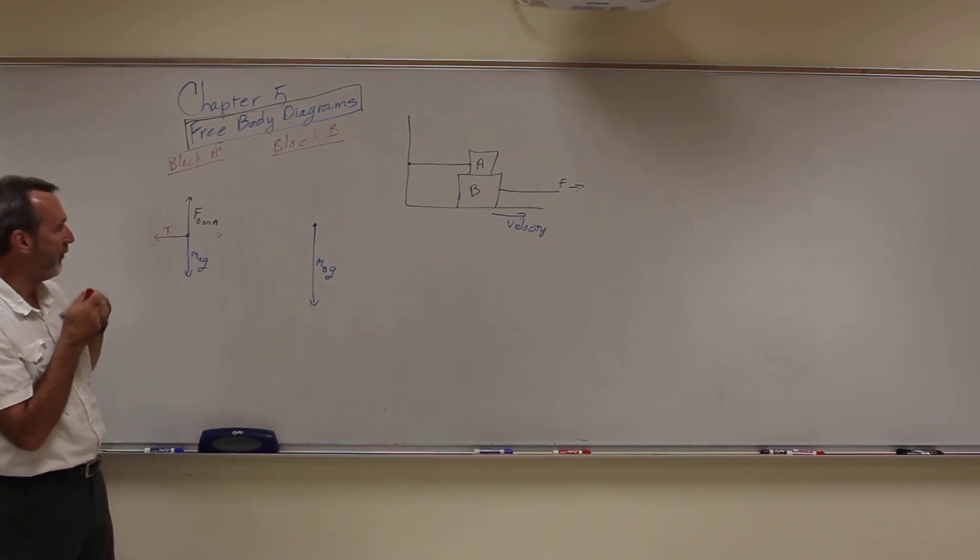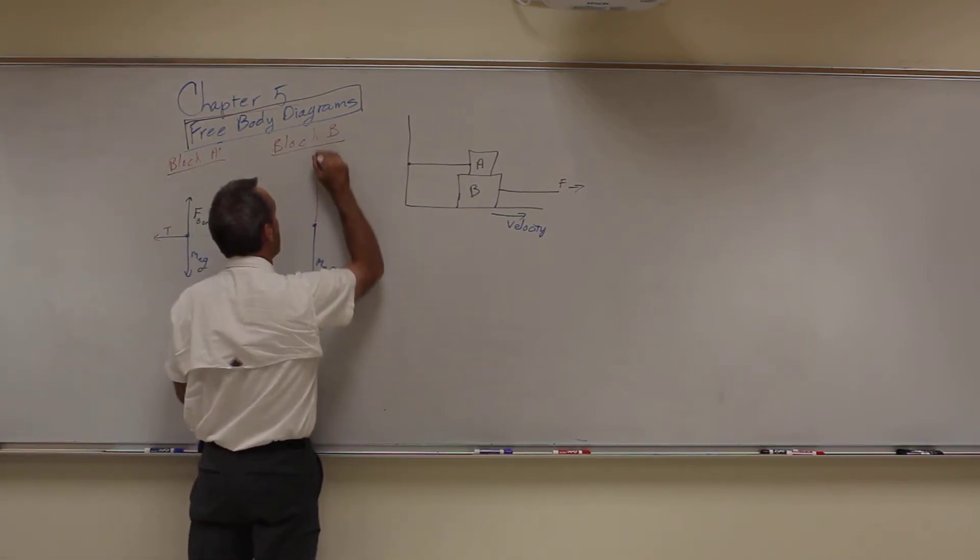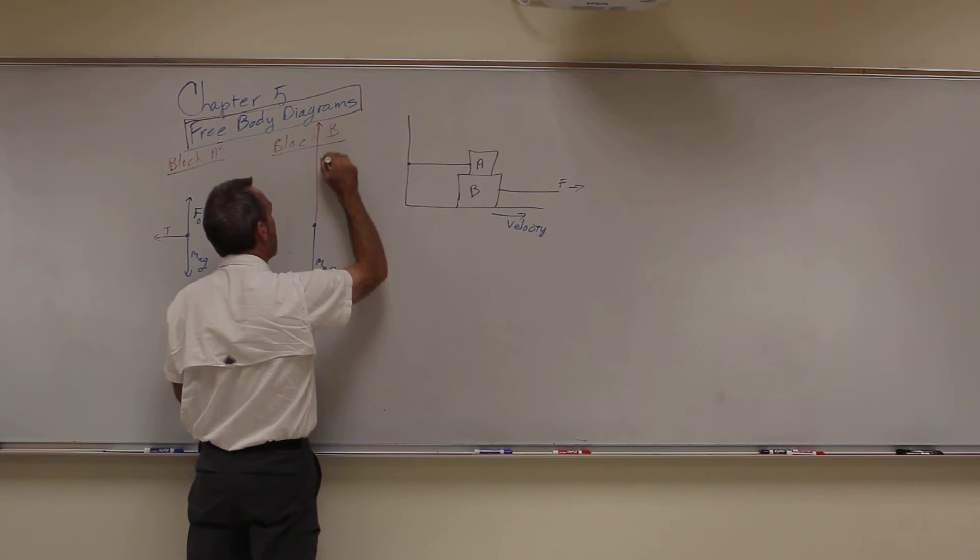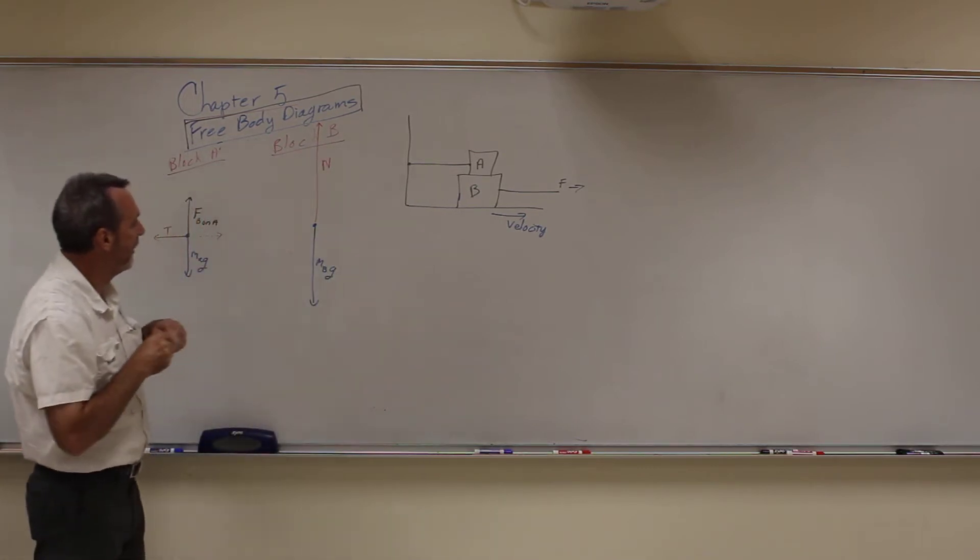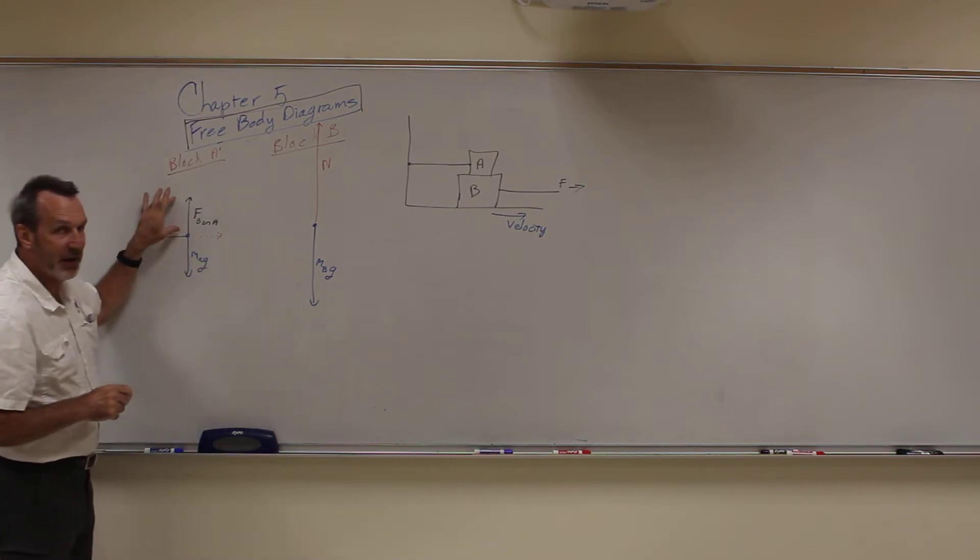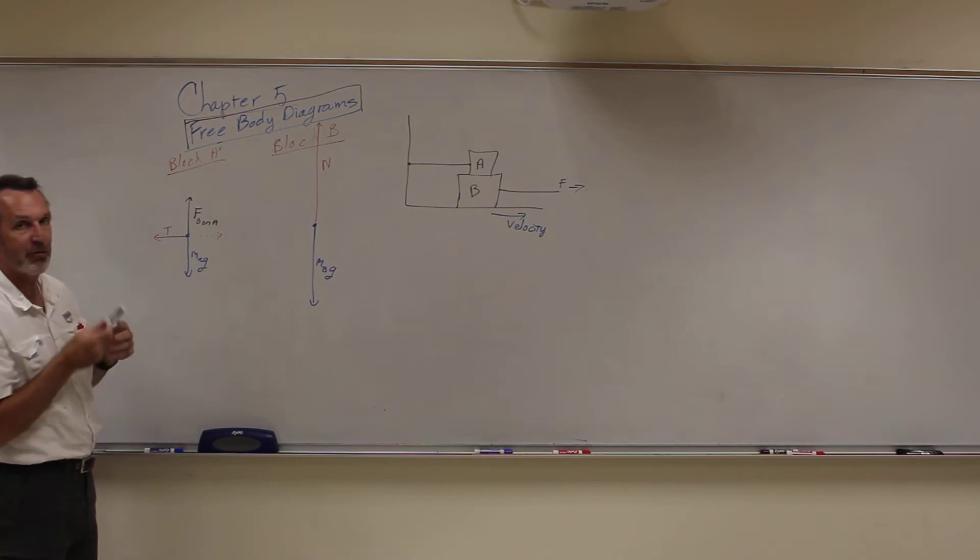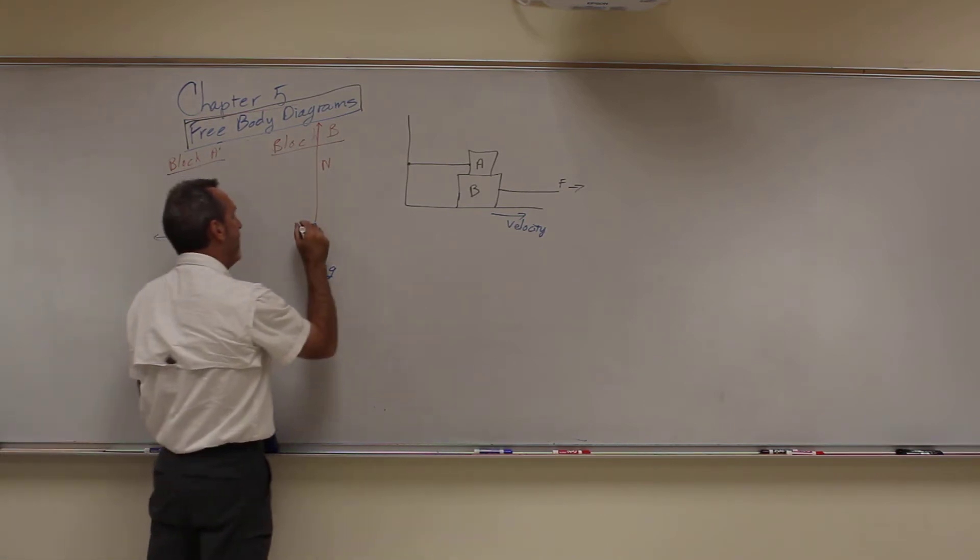Then we have a normal force from the ground. So we have a normal force going up here and it's actually going to be very large. It's going to be larger than this one. Why? Because if there's a force of B on A, there has to be an equal and opposite force of A on B. And that goes right here.